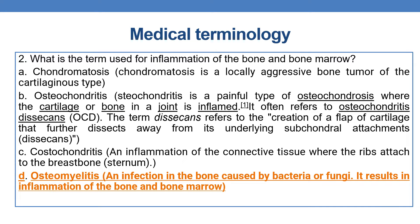Coming to the next question: what is the term used for inflammation of bone and bone marrow? There are four options. Option A is chondromatosis — a locally aggressive bone tumor of the cartilage. Option B is osteochondritis, a condition where cartilage or bone in a joint is inflamed, often referred to as osteochondritis dissecans (OCD). The term dissecans refers to the creation of a flap of cartilage that detaches away from its underlying subchondral attachments.